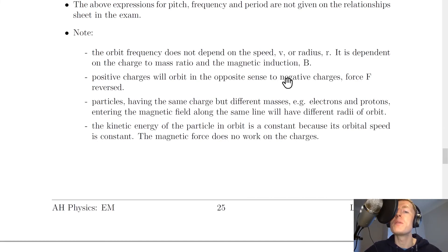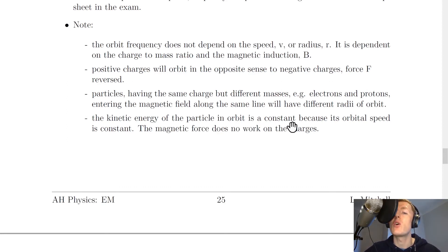Positive charges will orbit in the opposite sense to negative charges, with force f reversed. Particles having the same charge but different masses, for example electrons and protons, entering the magnetic field along the same line will have different radii of orbit. And this is useful in mass spectrometers, where you can work out what particles are based on their radii of orbit. And lastly, the kinetic energy of the particle in orbit is a constant because its orbital speed is constant. The magnetic force does no work on the charges.